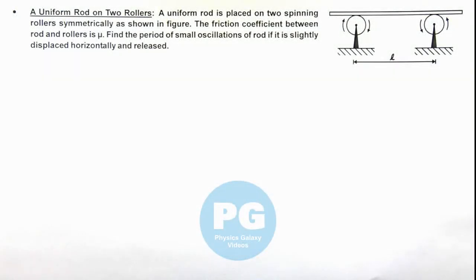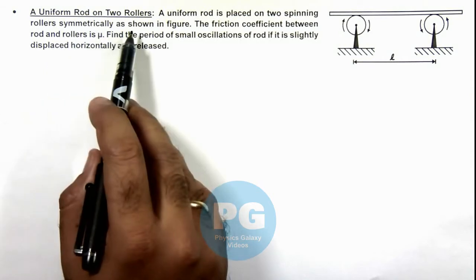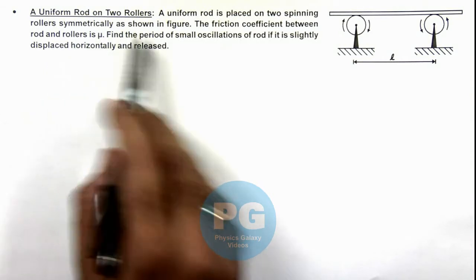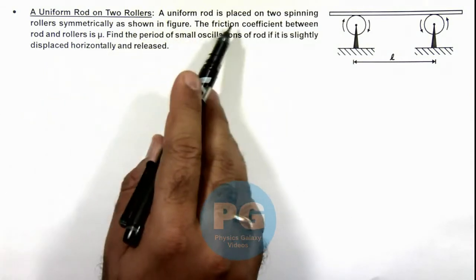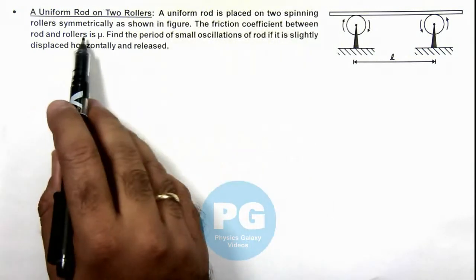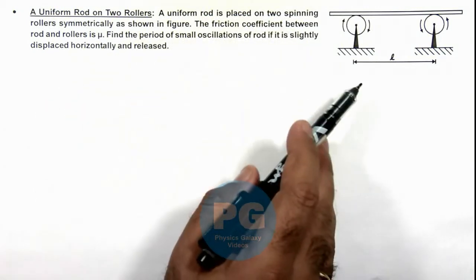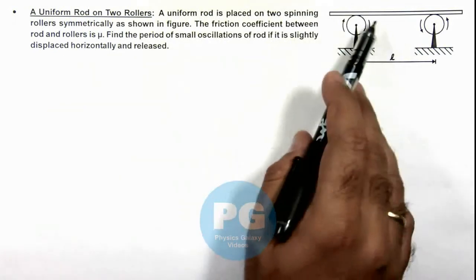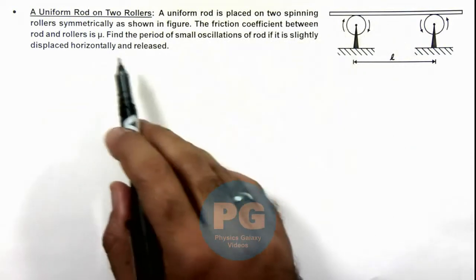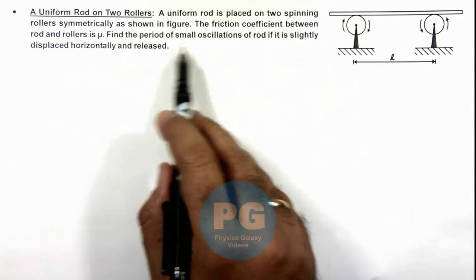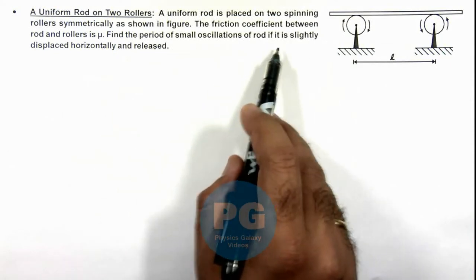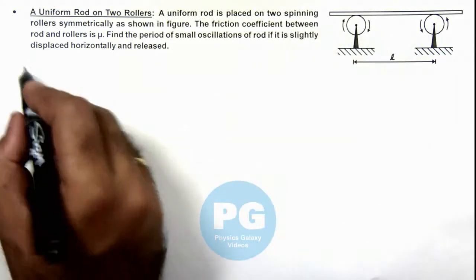In this illustration we'll discuss a uniform rod on two rollers. A uniform rod is placed on two spinning rollers symmetrically as shown in figure. The friction coefficient between the rod and rollers is μ. We are required to find the time period of small oscillations of rod if it is slightly displaced horizontally and released.